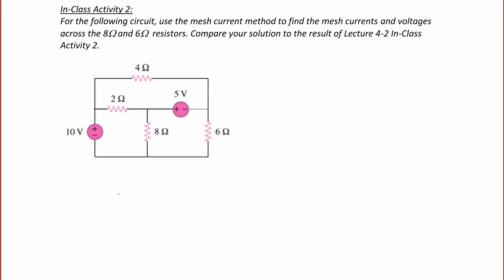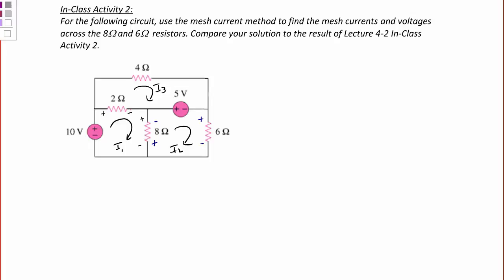First, we're going to label the three meshes: I1, I2, and I3. And just as we did before, we're going to label the polarities on the resistors with respect to I1. So the 2 ohm is positive on the left, negative on the right. The 8 ohm is positive on top, negative on the bottom. Then for mesh I2, the 8 ohm is positive on the bottom, negative on the top, and the 6 ohm is positive on the top, negative on the bottom. Then for mesh I3, the 2 ohm is positive on the right, negative on the left. The 4 ohm is positive on the left, negative on the right.